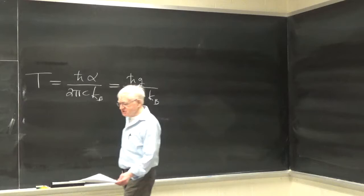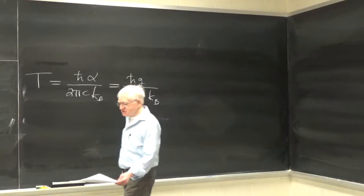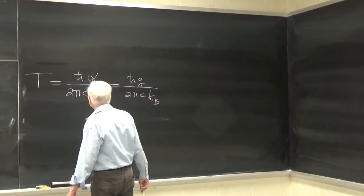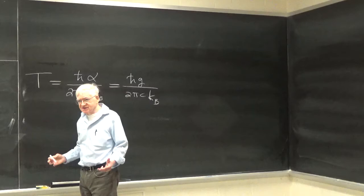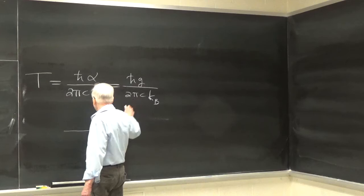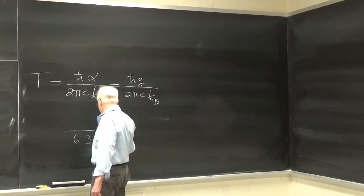It might be fun to work it out just since we're standing here — somebody have an internet connection? Okay, so we need to use MKS. And let's be generous — 2π is about 6, c is 3 times 10 to the 8. So what I need is ℏ and k_B.